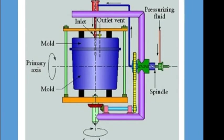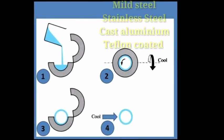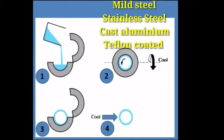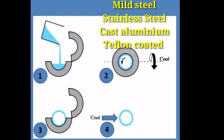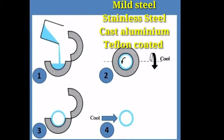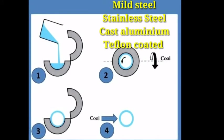About the materials, mild steel molds or stainless steel molds, cast aluminum molds, and teflon coated molds are used. These are the materials which are used for the rotational molding process.